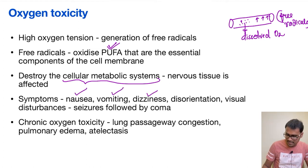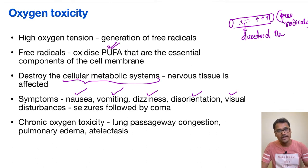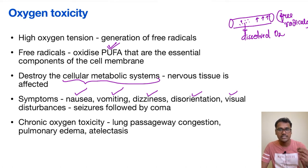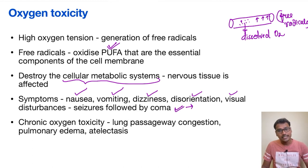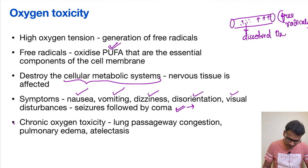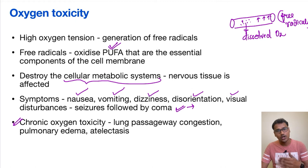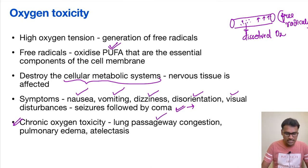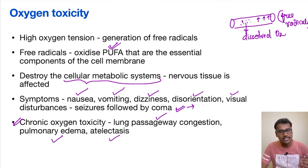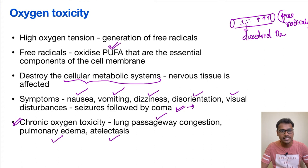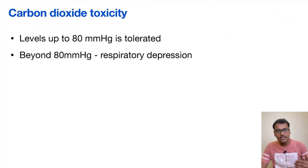Symptoms of acute oxygen toxicity include nausea, vomiting, dizziness, disorientation, and visual disturbances, and finally the nervous system is severely affected, causing seizures followed by coma. In chronic oxygen toxicity, prolonged exposure to high-pressure oxygen primarily affects the pulmonary system, causing lung passageway congestion, pulmonary edema, and atelectasis — because the lung is the first organ facing this high partial pressure of oxygen.